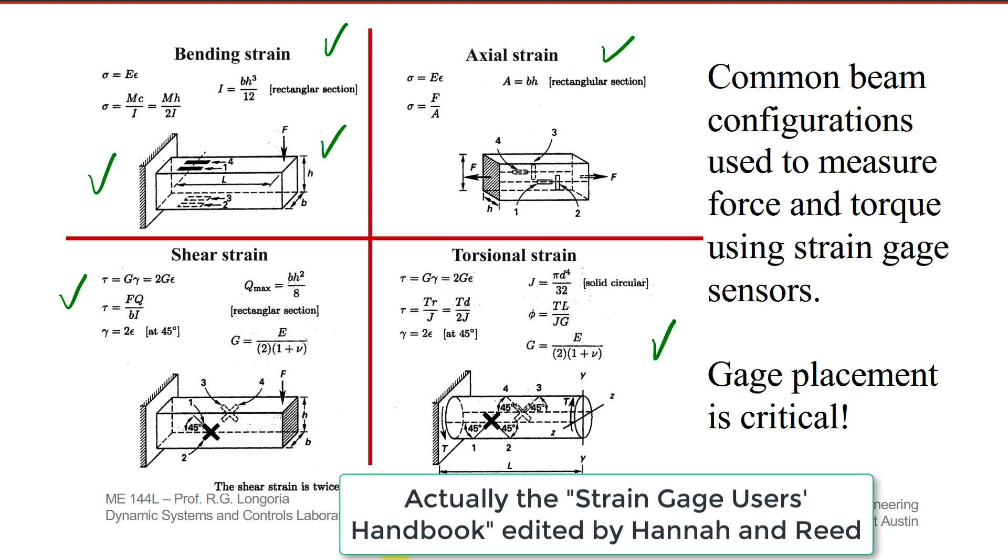There's also a really good handbook called the Strain Gauge Handbook. If you ever get into this field, that's a very good reference that you can find in the library. For any of these designs, gauge placement is critical. Where you put the gauges, the kind of gauges—note these can sense the shear strain to detect torsional strain, so can these here. So again, many different kinds of strain gauges available for different applications.